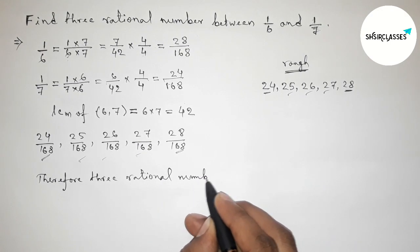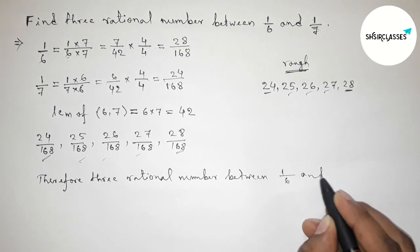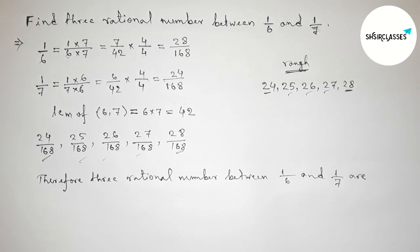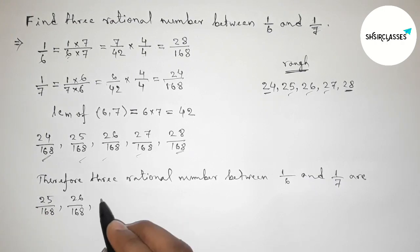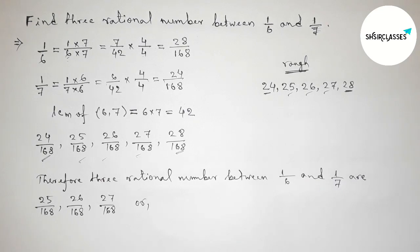Therefore the 3 required rational numbers between 1/6 and 1/7 are: the first one is 25/168, then 26/168, then 27/168.